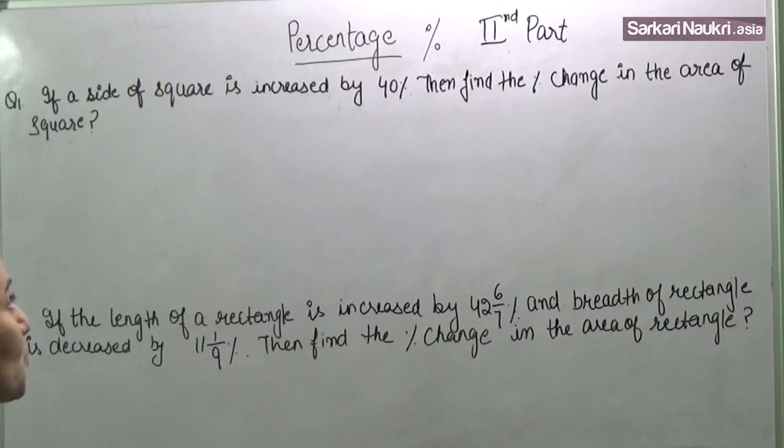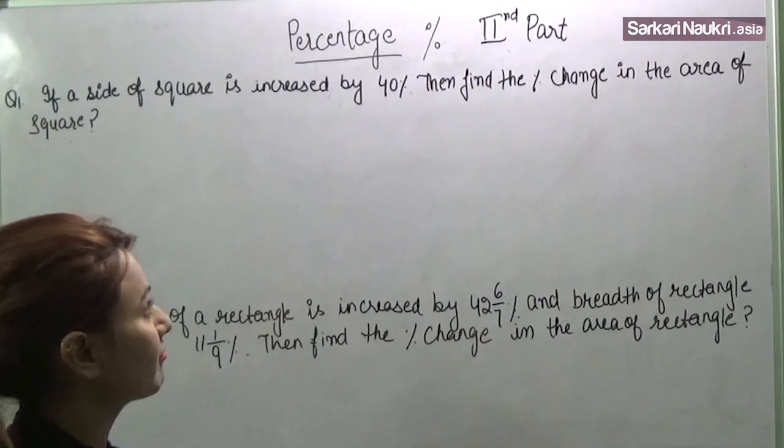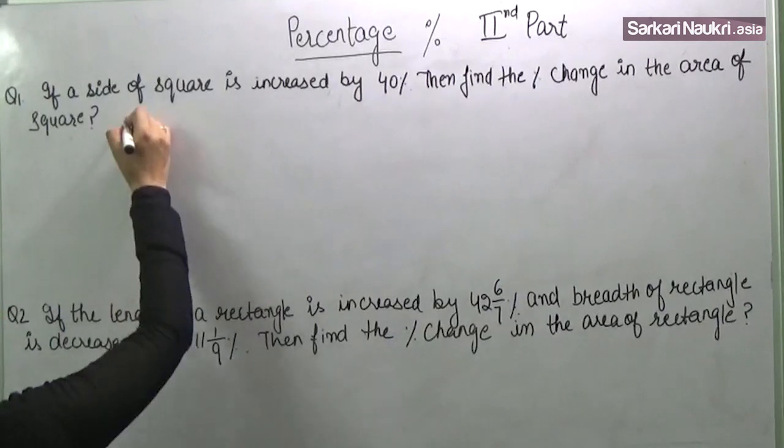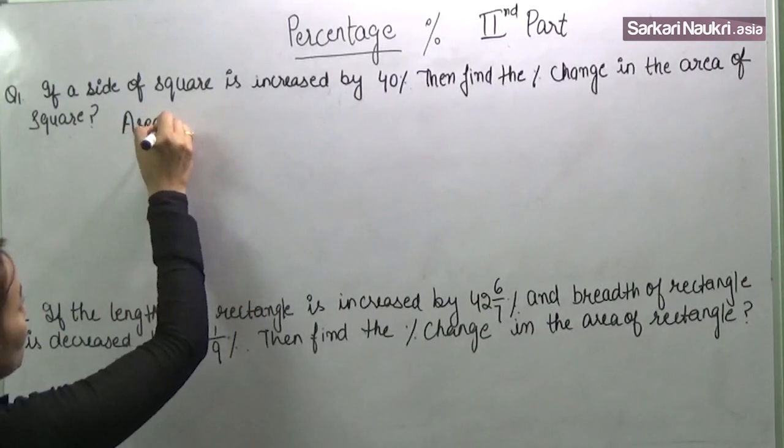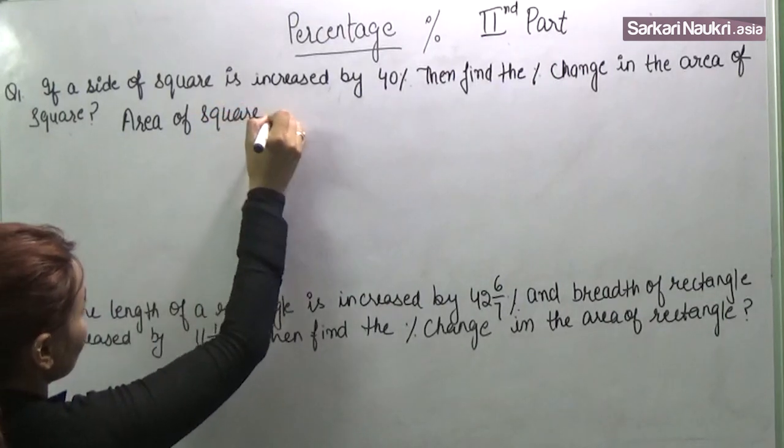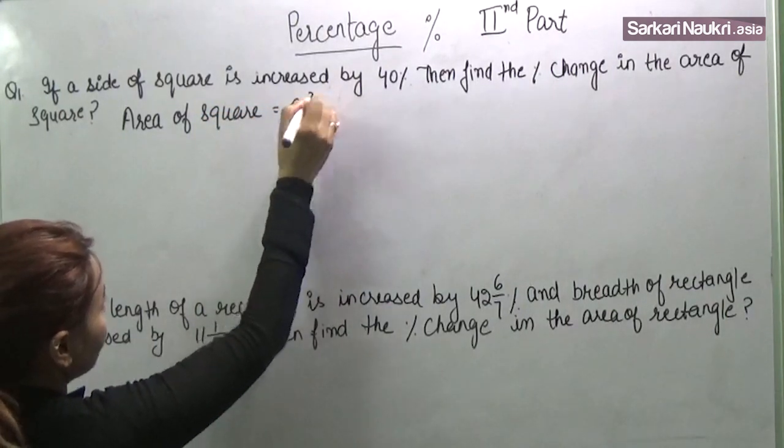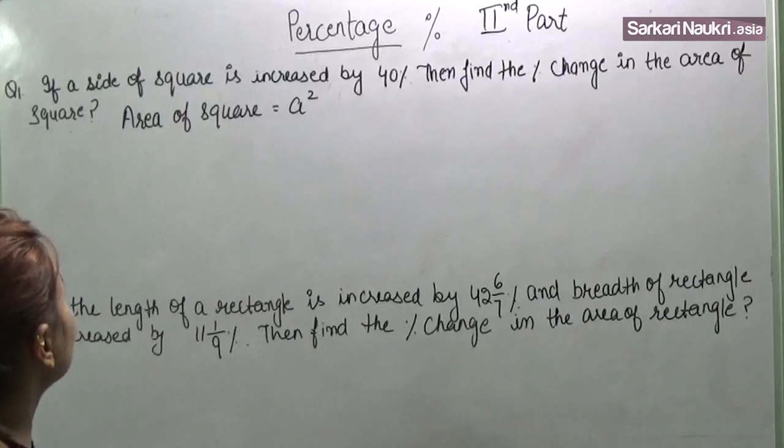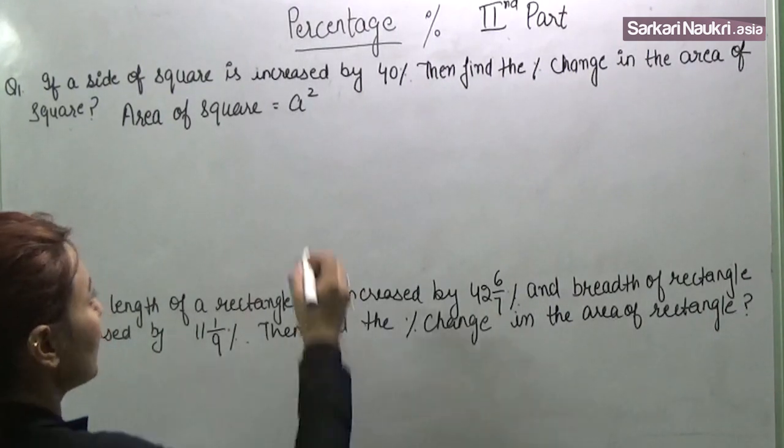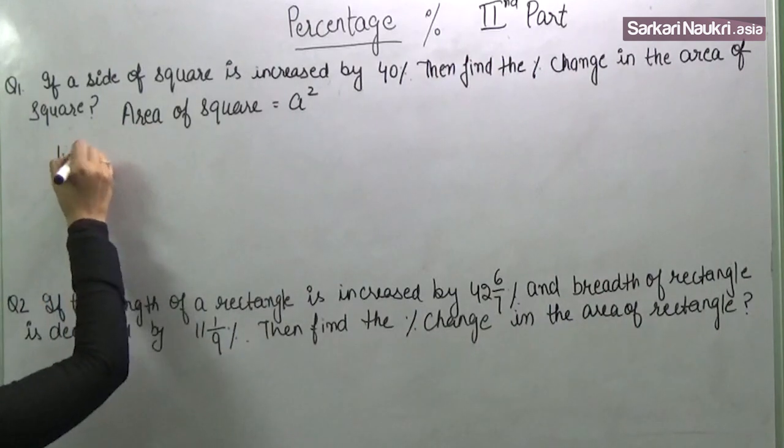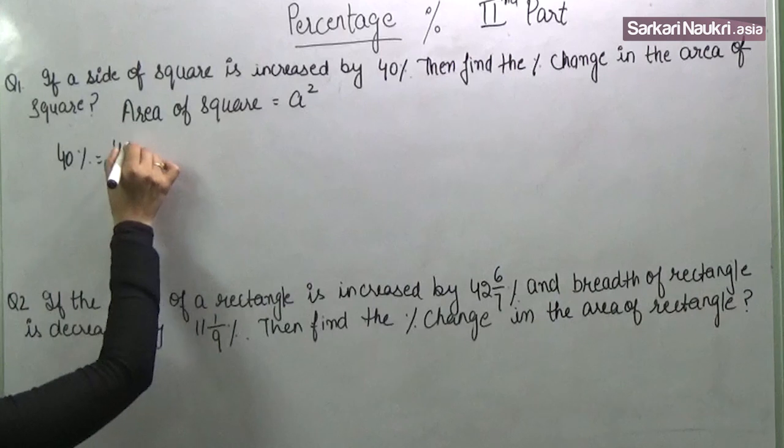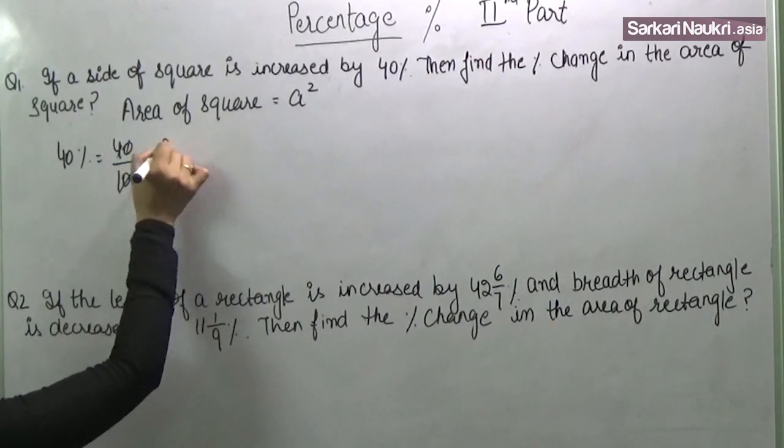If a side of a square is increased by 40%, then find the percent change in the area of square. What is the area of square? First of all, we need to know area of square is A square. What is the percentage which is increased? Side of the square is increased by 40%. 40% we can write in this form.